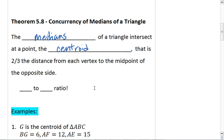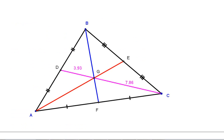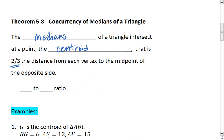This tells us that it is 2 thirds the distance from each vertex to the midpoint of the opposite side. What that means is that the midpoint to the centroid is 2 thirds of the entire length of the median. And we have this 2 to 1 ratio.